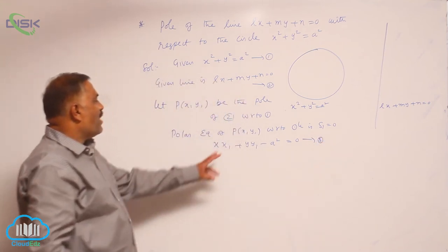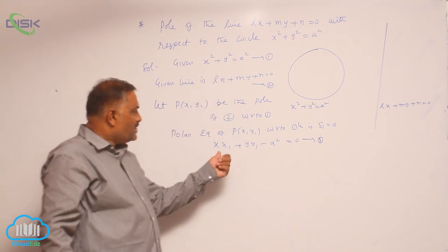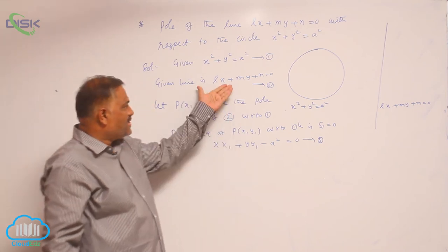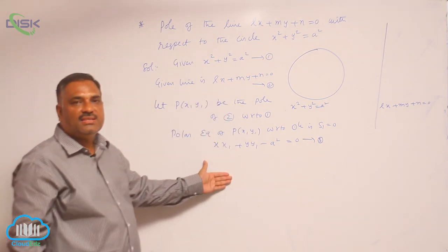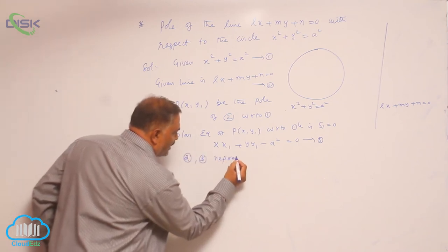We know that for the point P(x₁, y₁), equation 2 is the polar and equation 3 is also polar. That means equations 2 and 3 represent the same line.